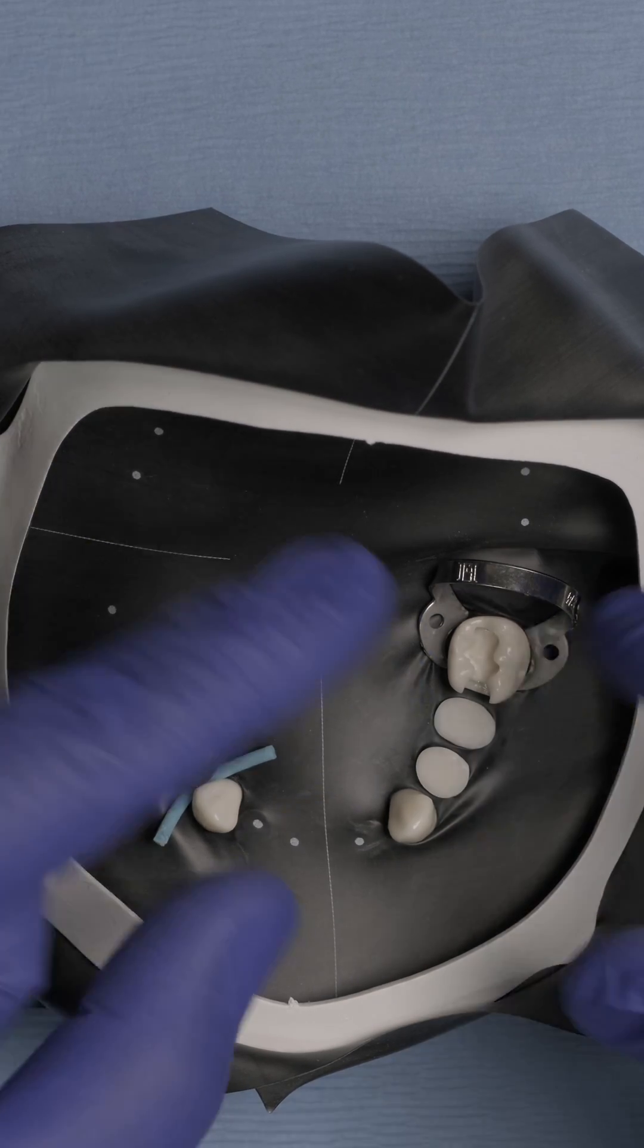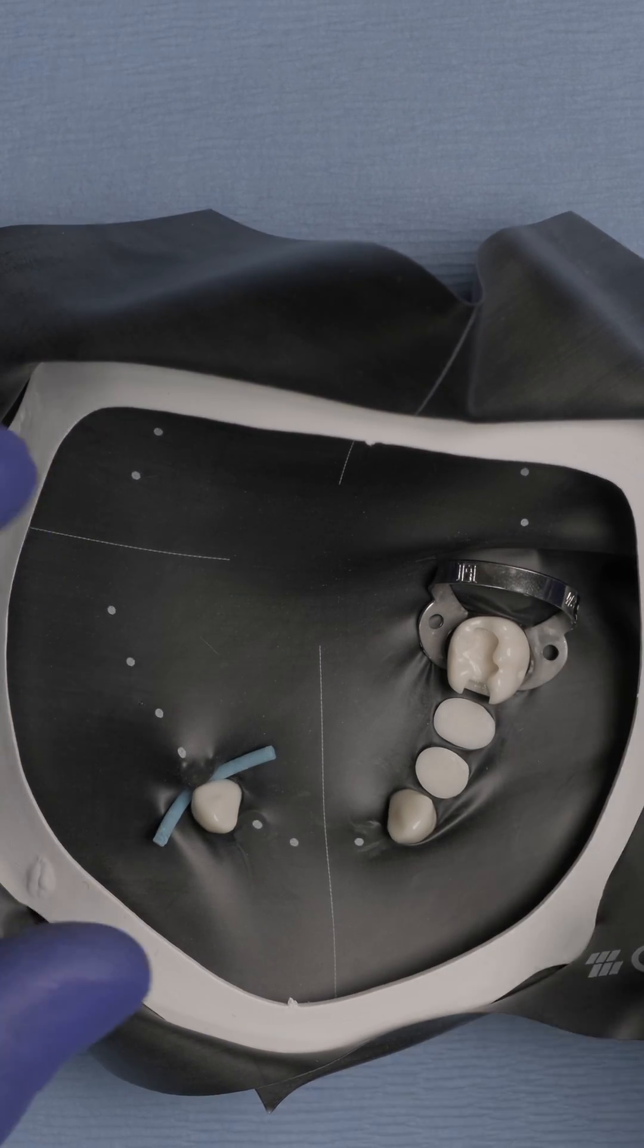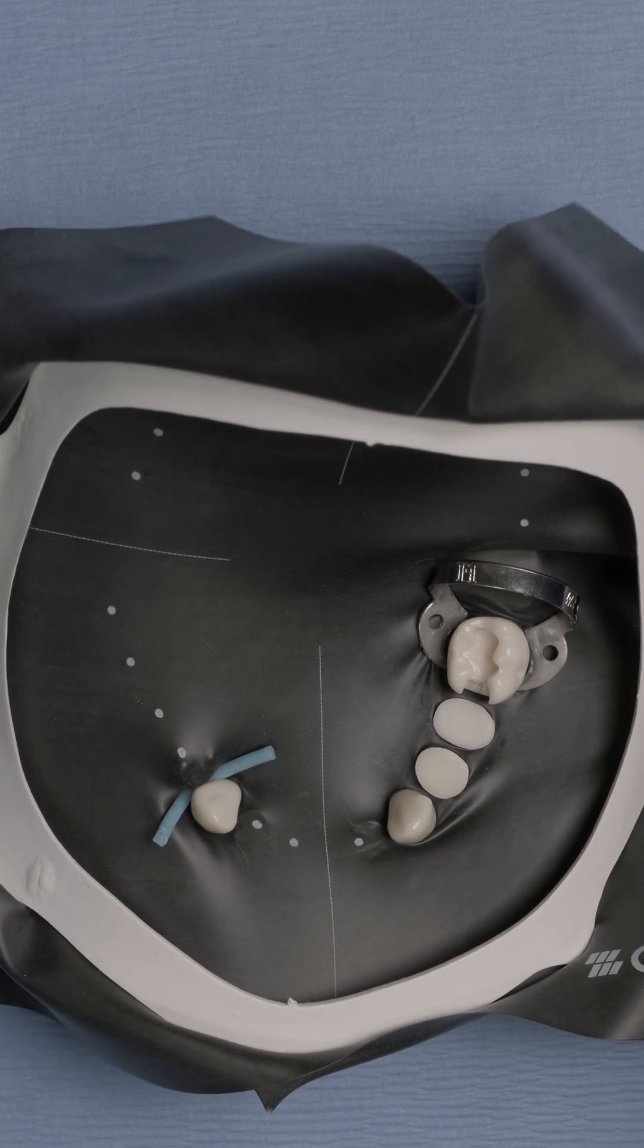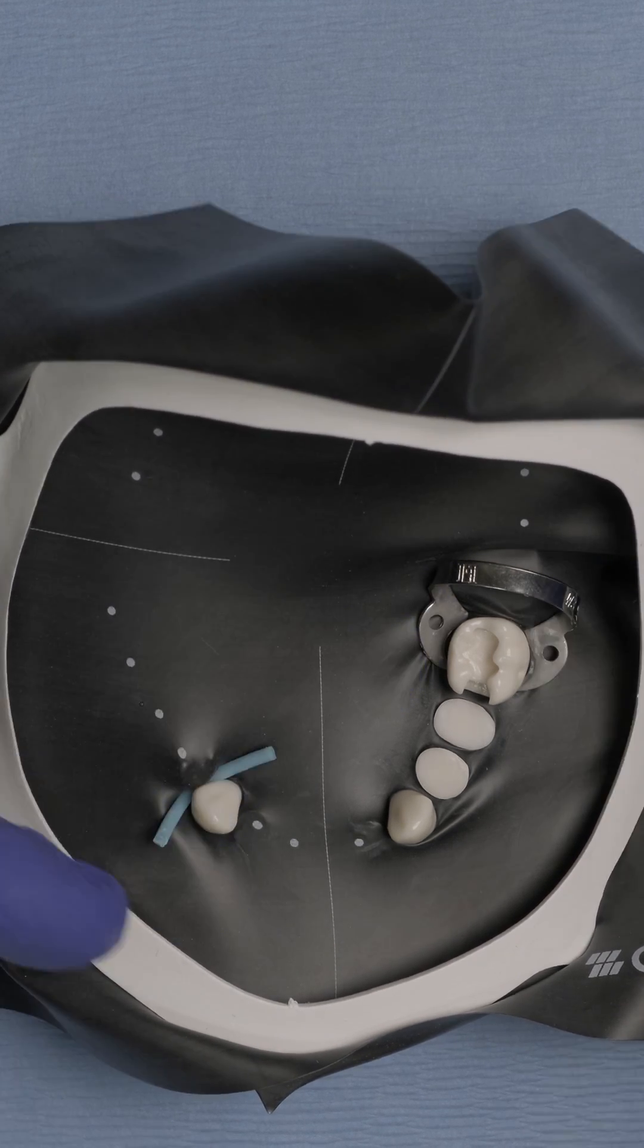So as you can see, we have our operative area isolated, correctly isolated using the isolated black rubber dam, a W3 clamp and a wedget.